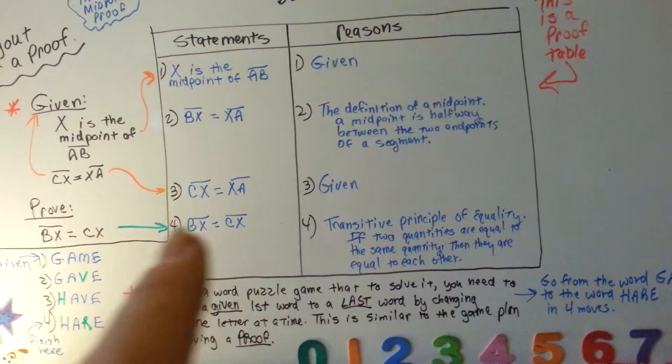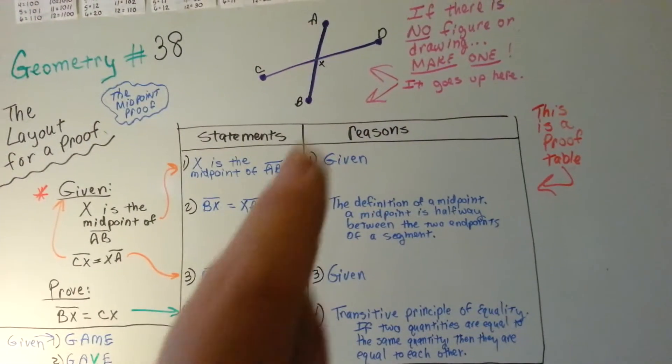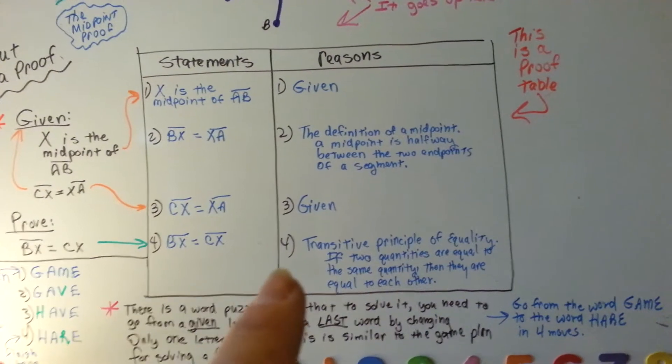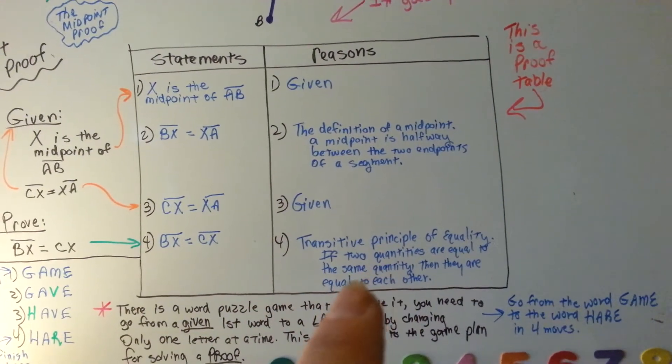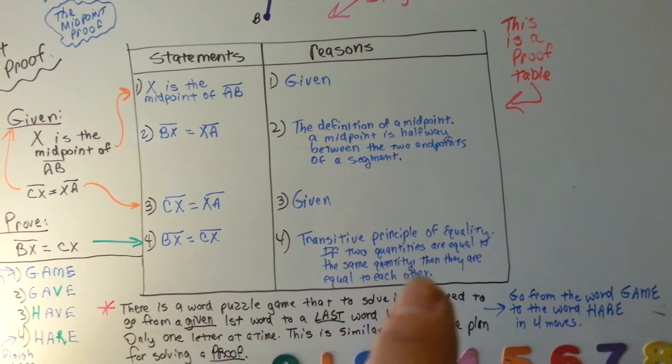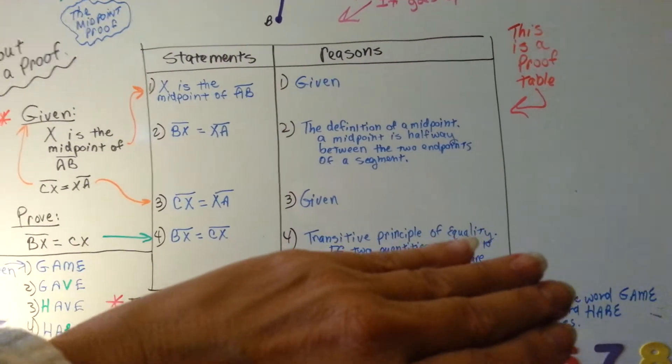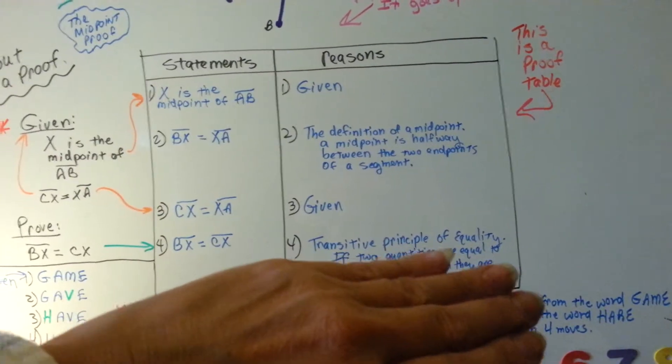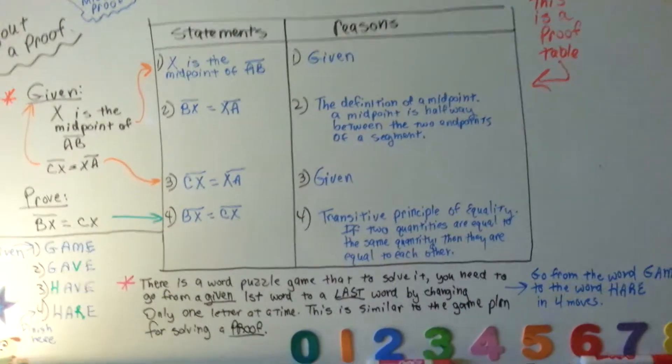So, the reason for segment Bx equaling Cx is the transitive principle of equality. If two quantities are equal to the same quantity, they are equal to each other. Now, you could have also just written transitive principle of equality or just transitive even. Just the one word transitive would have been accepted.